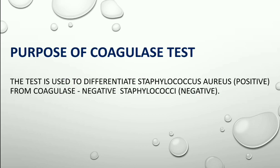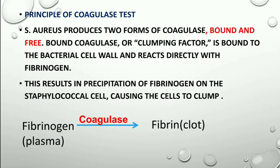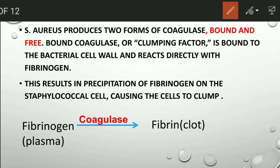The coagulase test is used to differentiate Staphylococcus aureus, which is coagulase positive, from coagulase negative Staphylococcus species. The principle of the coagulase test: Staphylococcus aureus produces an enzyme called coagulase, which can act upon fibrinogen and form a fibrin clot.